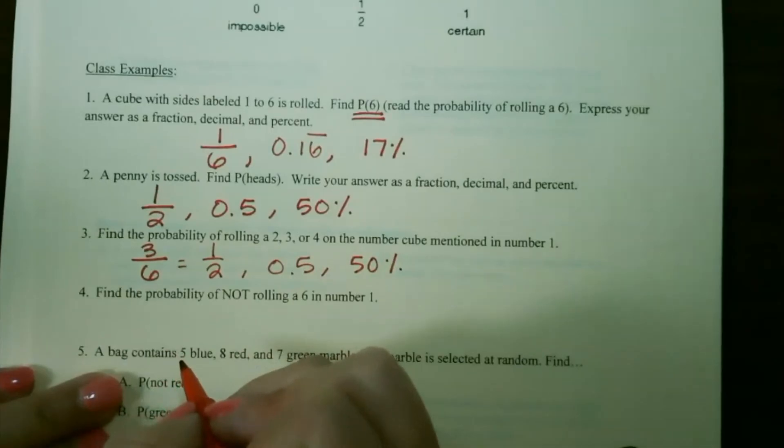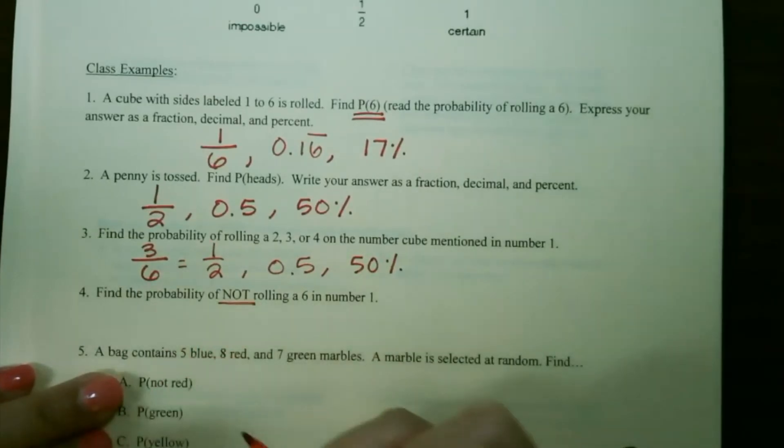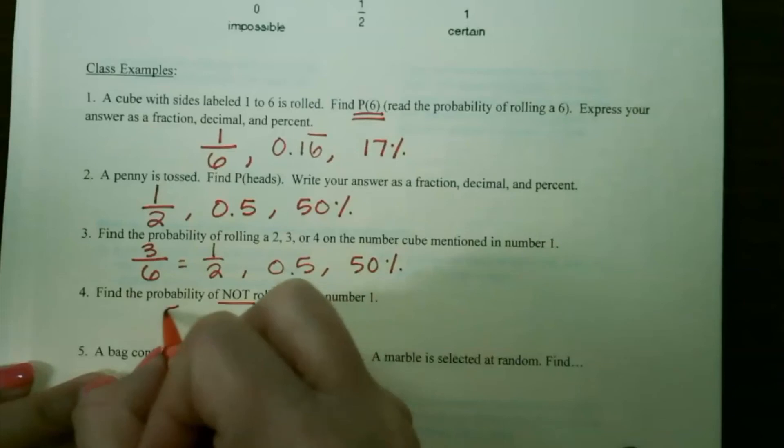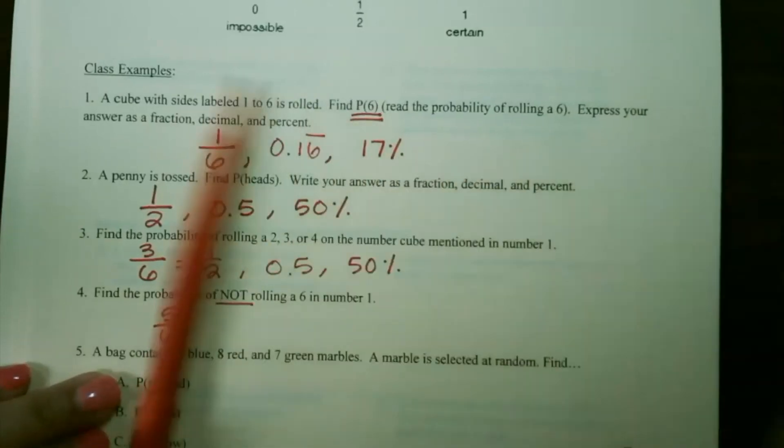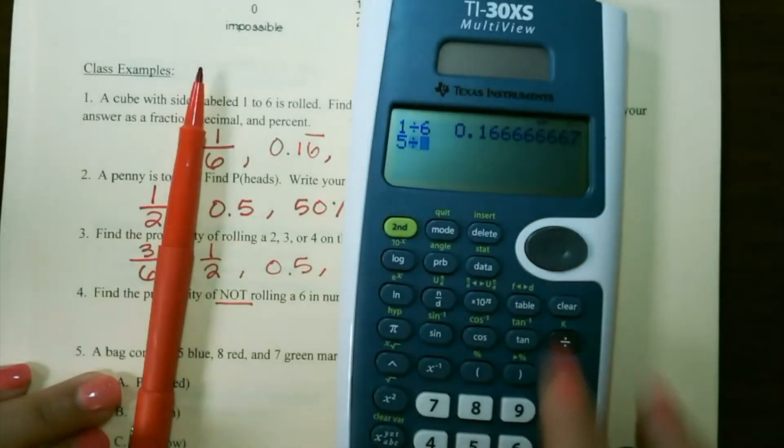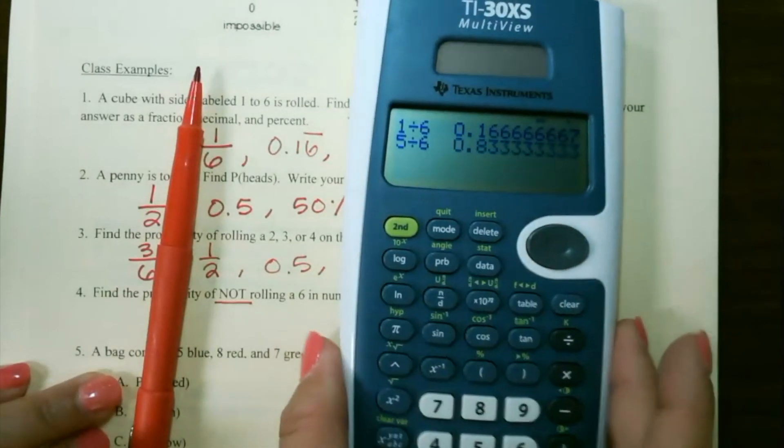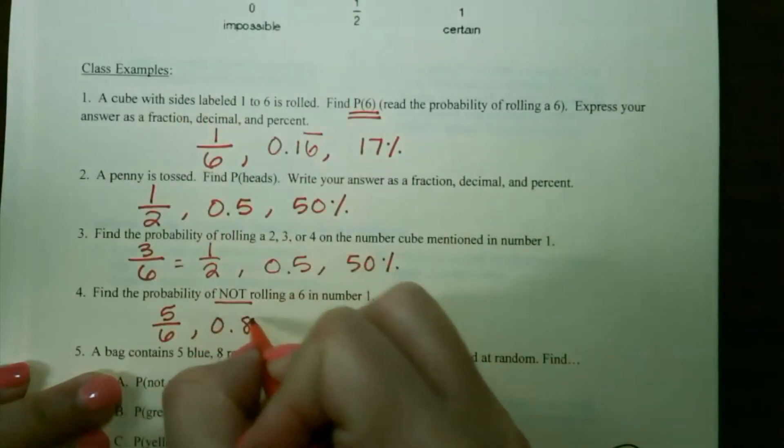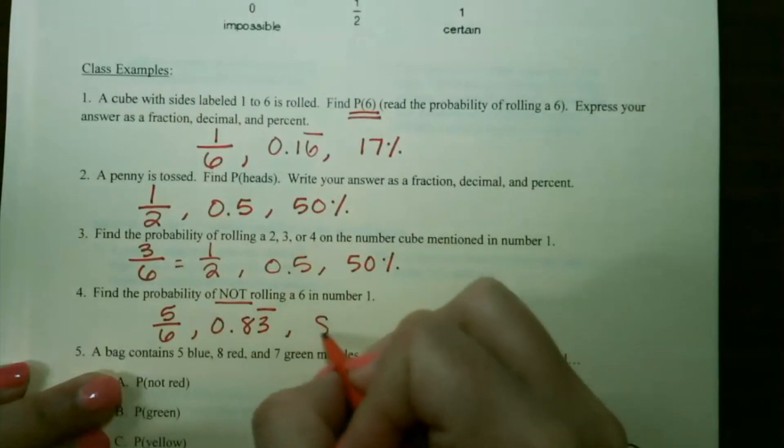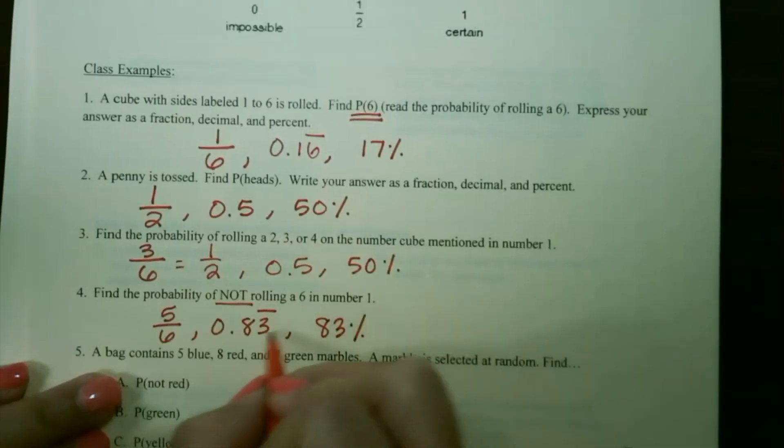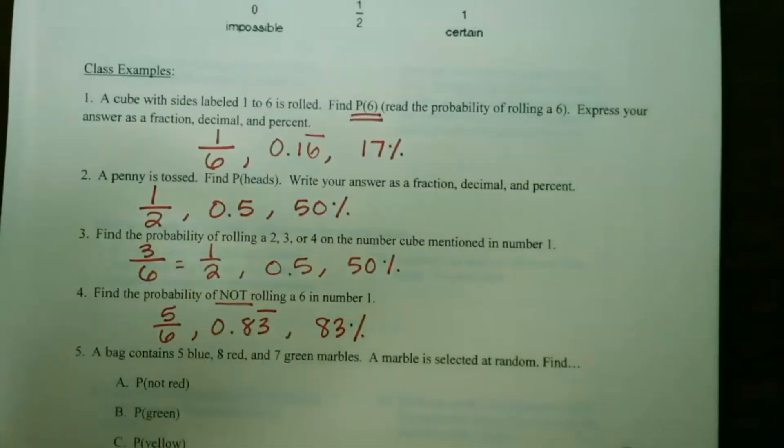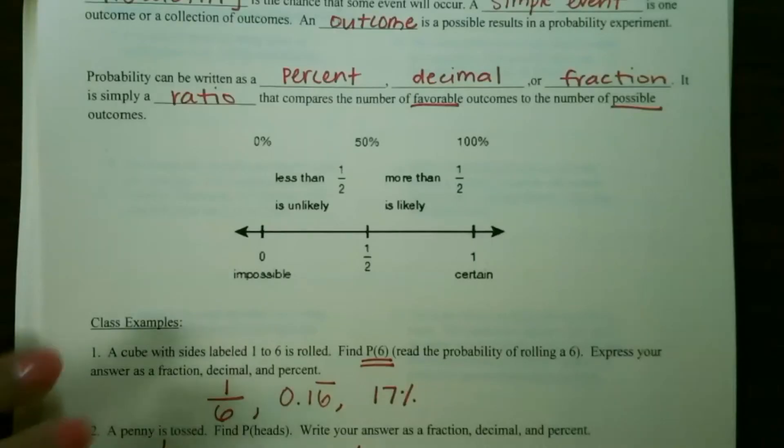For our last example, find the probability of not rolling a 6. So that means there are 5 favorable outcomes out of 6 total outcomes. Again, 5 divided by 6 would be 0.83 repeating. So that would be 83 percent, because the 3 tells that to stay the same and not round up.